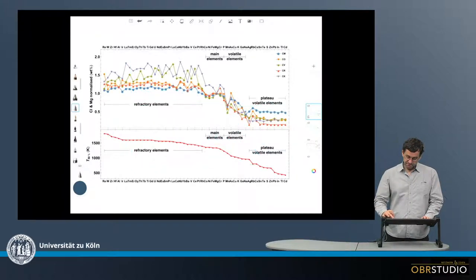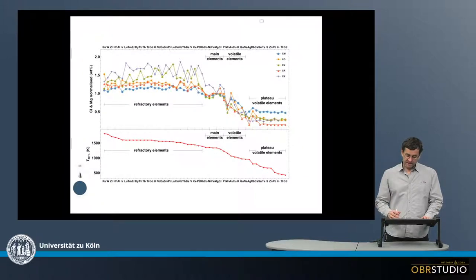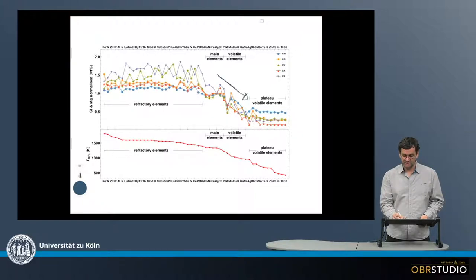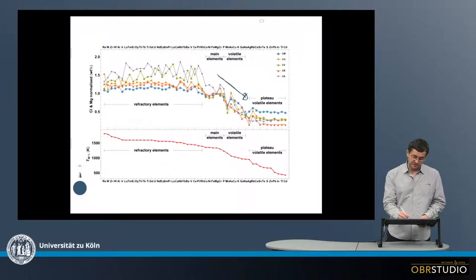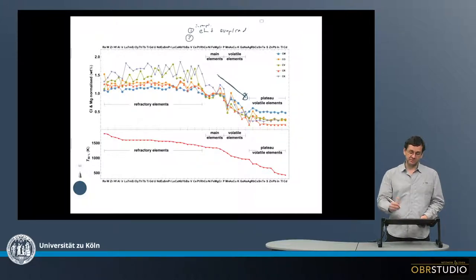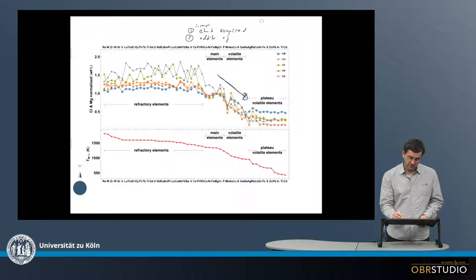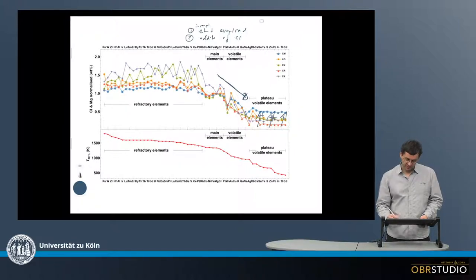So if we go back here to this initial plot, what we now have is sort of a two-step process. Initially, there was a volatile element depletion and incomplete volatile element depletion or incomplete condensation of elements. So this is the first step, incomplete element evaporation or condensation. And then there's a second step, and this would then be the addition of CI-like material that increased the volatile elements to these plateaus.